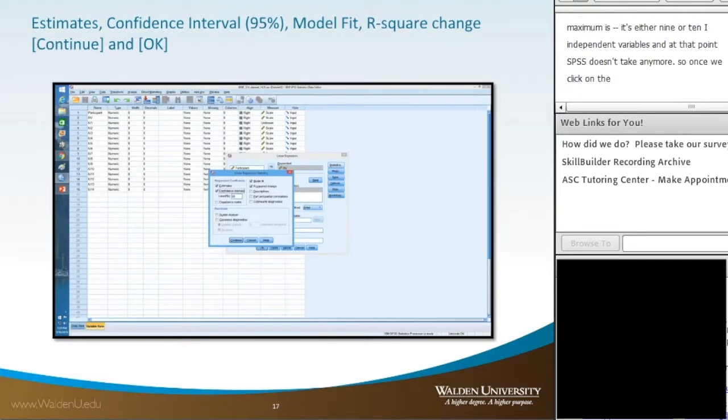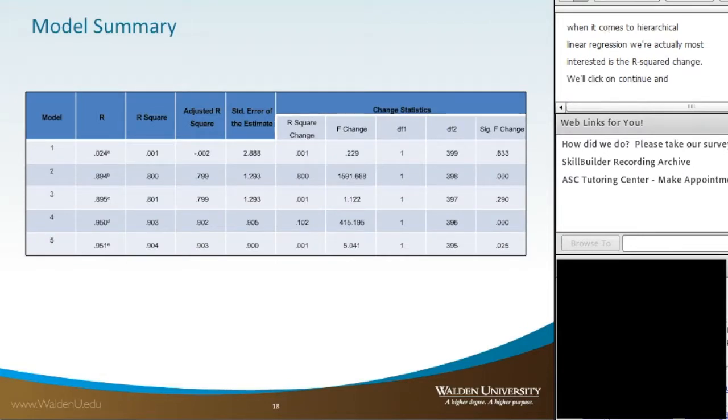Once you click on the Statistics button, we want to check off the Estimates, we want our 95% confidence interval, we want the Model Fit, and we want the R-squared change. The R-squared change is really quite important for hierarchical linear regression because that's where we're actually most interested.